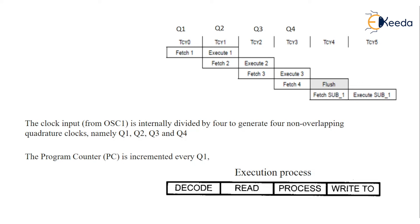The pipeline process saves both time and power. It is like a pizza baking process — when you make the base and spread the toppings, at the same time the next base is being cooked. Similarly, while the first instruction is in execution, the second instruction is in the fetch phase, saving time as well as power.